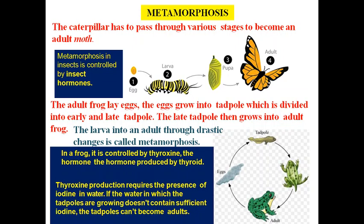Today we will also learn about a very interesting topic known as metamorphosis — a very amazing natural process. You must have wondered how a caterpillar turns into a beautiful butterfly. This ugly caterpillar passes through various stages: egg, larva, pupa, and then a beautiful butterfly is created. This is a complete, drastic transformation of an egg into a beautiful butterfly.